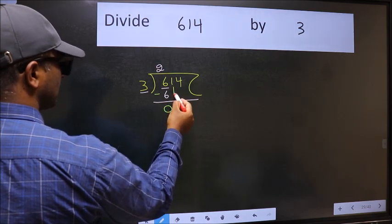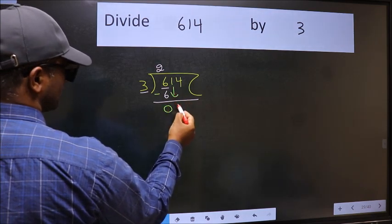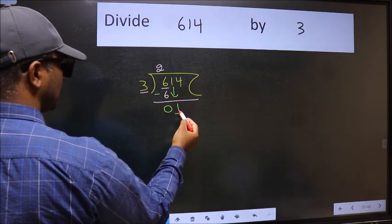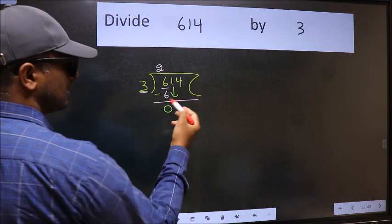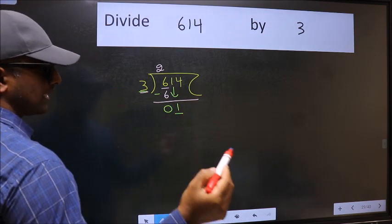After this, bring down the beside number. So, 1 down. Now, here we have 1 and here 3. 1 is smaller than 3, so we should bring down the second number.